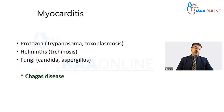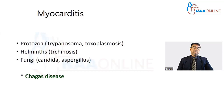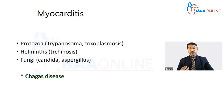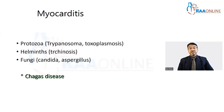Myocarditis also occurs due to infections with protozoa, helminths, and fungi. Among the protozoa, one important cause is Trypanosoma cruzi, which also causes Chagas disease, and toxoplasmosis. Helminths that cause trichinosis and fungi such as Candida and Aspergillus are also implicated.